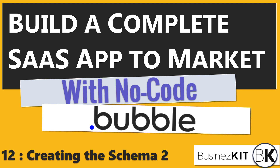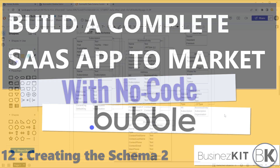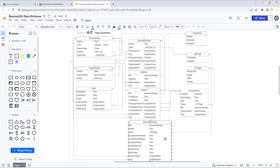Hey everyone, welcome back. This is part 12 of the series and in this one we're going to complete our data schema. The way we're going to do that is by implementing our list type, which is fairly straightforward — it's similar to how we did the other one.